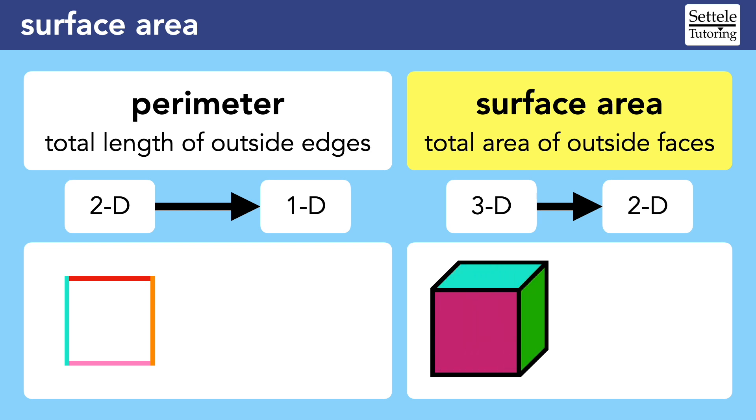To find the perimeter, we ignore the direction and position of each side and just focus on how long it is. The perimeter of the square would be the total length of these four lines added together. The same is true for surface area.